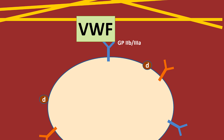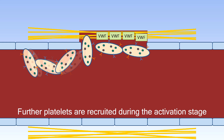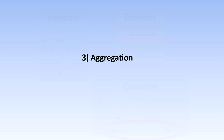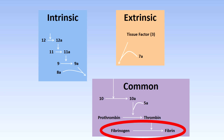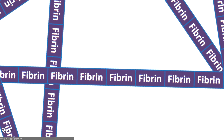Dense granules contain ADP and thromboxane, both of which help to activate other platelets and also cause more vasoconstriction. Finally, in the aggregation stage, fibrinogen is converted to fibrin by the coagulation cascade. The fibrin polymerises and turns into a sticky mesh. Platelets bind onto the fibrin and their cell skeleton will again change shape, pulling everything in and creating a really dense and stable clot.